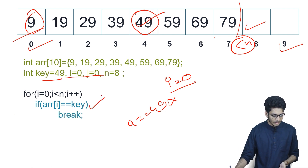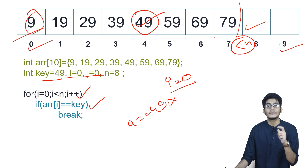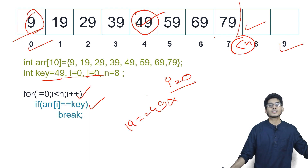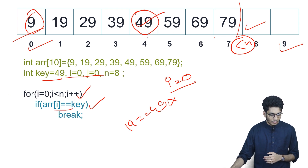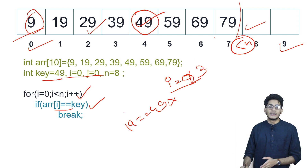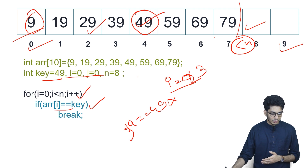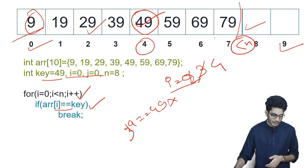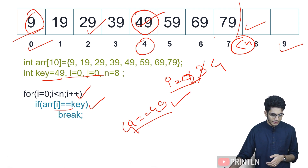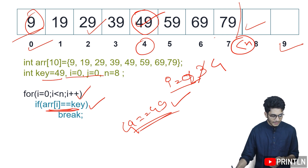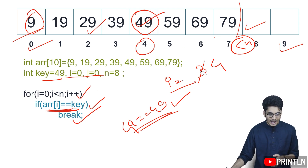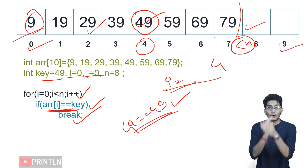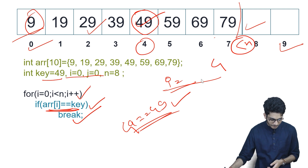Since 9 is not equal to 49, that block will not be executed — it returns false. The value of i increments to 1: value is 19, also not equal to 49. i becomes 2: value is 29, not equal. i becomes 3: value is 39, not equal. i becomes 4: the fourth index has 49 — this condition will be executed and it will terminate the loop. So 49 is found at index 4.